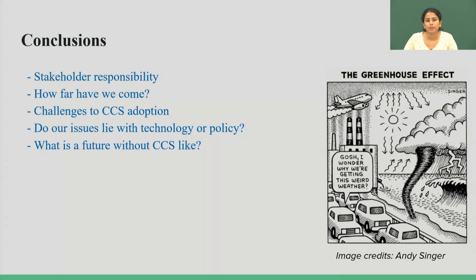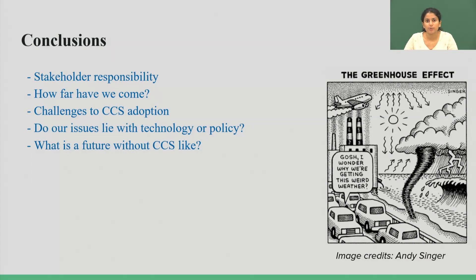CCS is struggling to be adopted in wider use. We have understood that CCS is heavy in the technical sciences and is better understood from that perspective; however, the social sciences can explore factors like policy and the application of CCS technologies in society. We need to understand whether our issues lie with technology or with policy. A future without CCS means we go past a point of no return in terms of climate change — it only accelerates further if we cannot use CCS technology effectively and within the stipulated period of time. This is why CCS is crucial to the climate change conversation and to our future. Thank you.